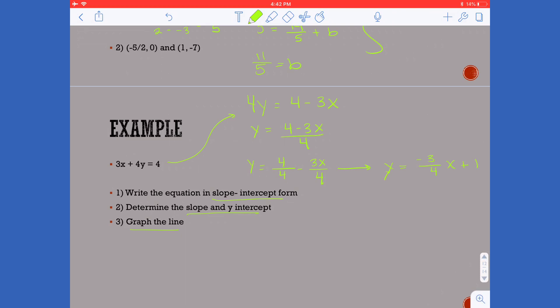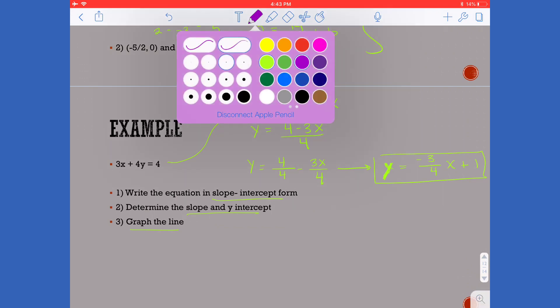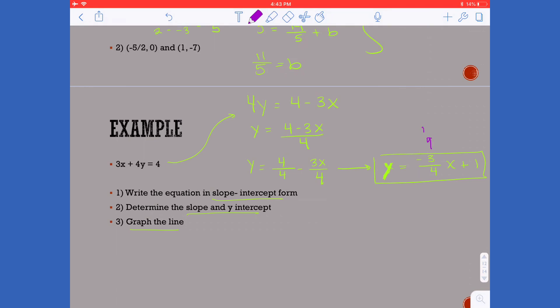And this is the same thing as saying y is equal to negative 3 over 4x plus 1. And that would be your final equation. And we know that looking at this my negative 3 fourths is my m, my slope, and positive 1 would be my y intercept value.